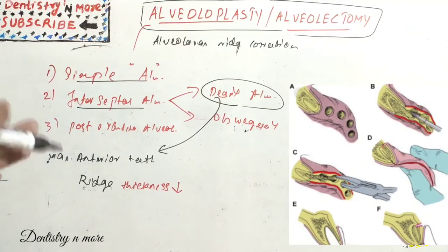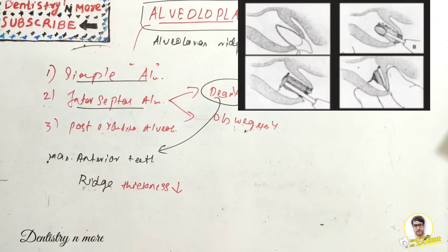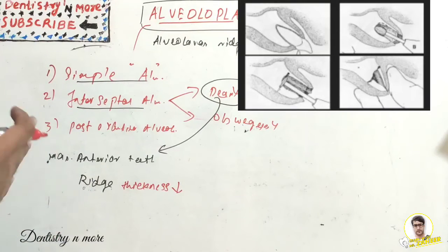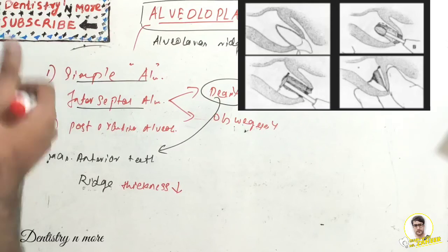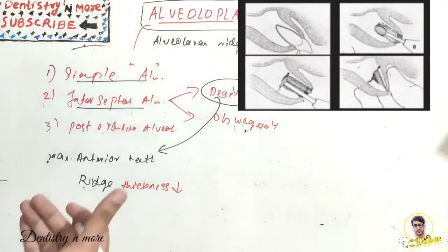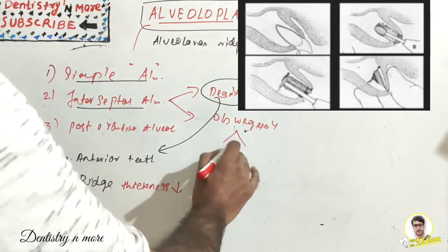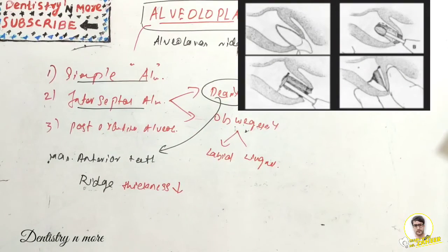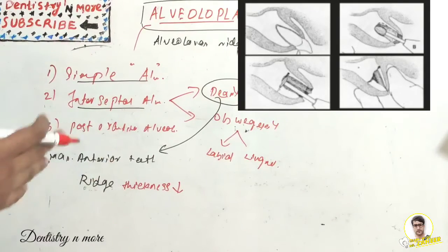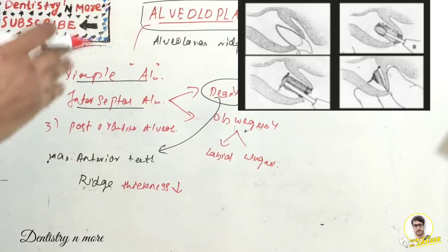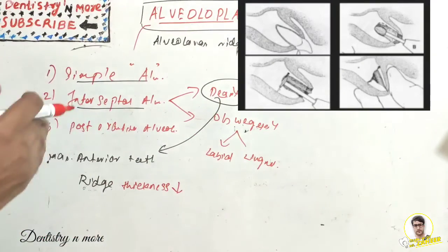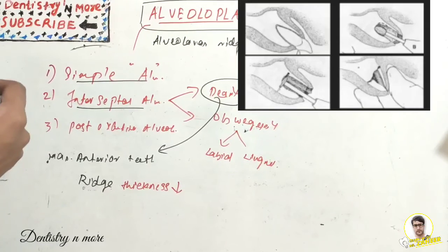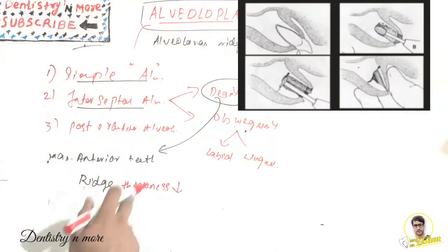After removing any sharp margins, suturing is done. The second modification is Obwegeser's modification, in which both the labial and palatal cortex are repositioned. This is done when the anterior proclination is too gross to be reduced just by labial plate repositioning. The procedure is almost the same as Dean's alveoloplasty, but the only addition is that the palatal plate is fractured too at its base and repositioned with the labial plate in the palatal direction. That is the difference between these two techniques.